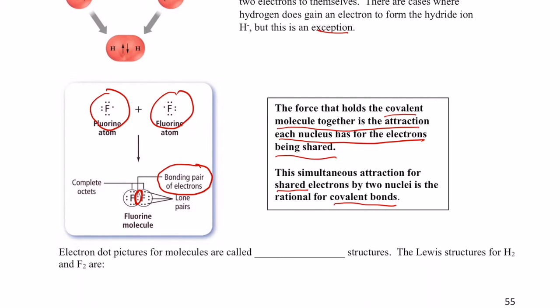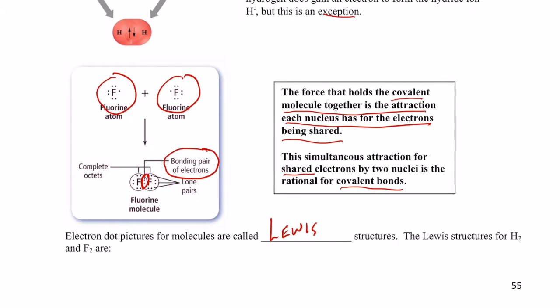Electron dot pictures for molecules are often called Lewis structures. The Lewis structures for H2 and F2 are as follows. H2, the two hydrogen atoms share a pair of electrons. For F2, we put a pair between the two. They also share a pair, but of course they have some lone pairs or non-bonding pairs as well. These shared pairs are what we call bonding pairs of electrons.